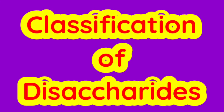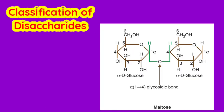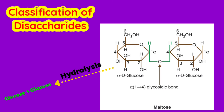Hello everyone. This video is about the classification of disaccharides and their identification. Disaccharides are carbohydrates formed by joining two monosaccharide units, or carbohydrates which on hydrolysis form two monosaccharides — these are called disaccharides.